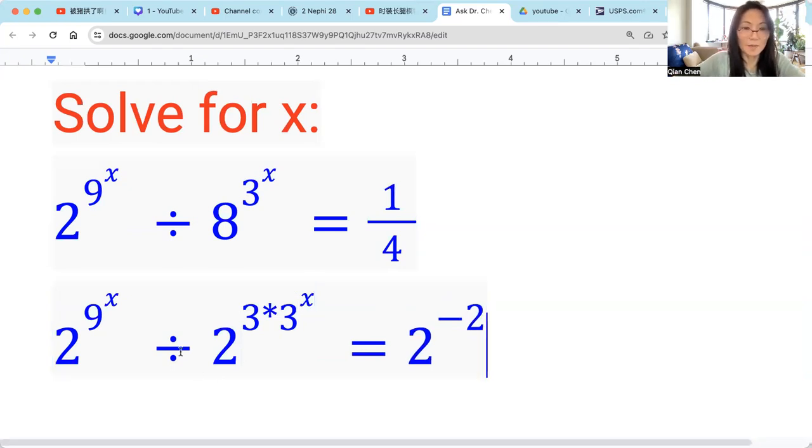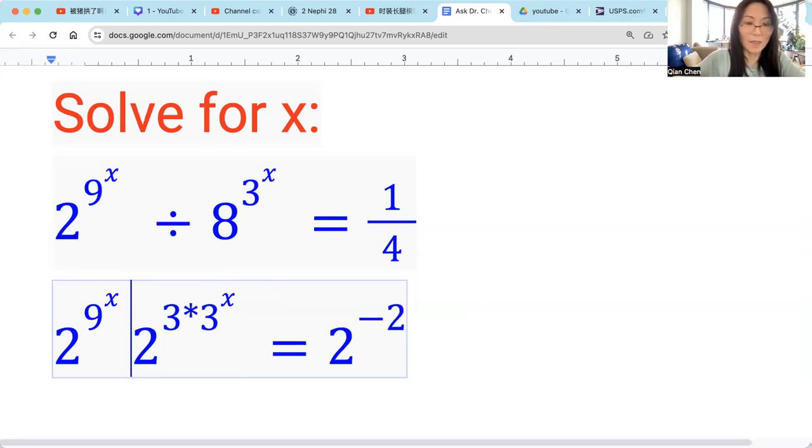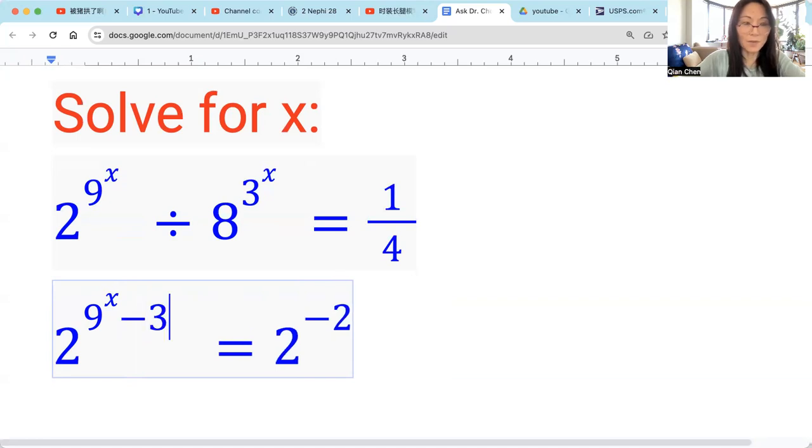Now the bases are the same. Remember, when we do division of the same base, we subtract the exponents. So we can combine those two bases to be 1 base, right? 9 raised by x minus 3 times 3 raised by x. Now both sides have the base 2.